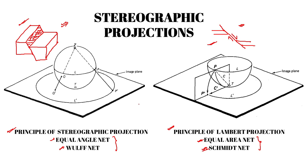As you can relate from the names: in the equal angle net, the angle of the feature is preserved — it remains the same. Whereas in the equal area net, the area is preferentially preserved. For example, if I draw a circle, that circle would remain a circle — maybe a smaller circle of different area — in the case of the equal angle net. But the same circle plotted on an equal area net might become an ellipse with the same area. So the angle is preserved in one, and the area is preserved in the other — the circle does not remain a circle, but the area is the same.